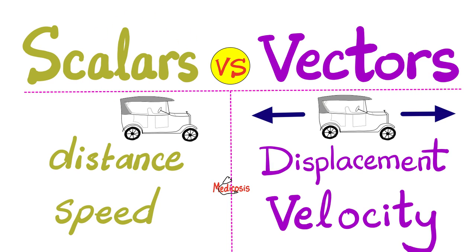Scalars do not have a direction, but vectors do have a direction. Put differently, a scalar has a magnitude only, but no direction. However, a vector has both a magnitude and a direction.